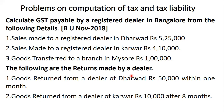Next, the following returns made by the dealer. The goods returned from a dealer of Dharwar amount to 5,25,000 — this is a return against the sale of 5,25,000. Any goods returned by the dealer within six months shall be completely deducted while calculating the taxable value of supply. Therefore it has to be deducted when calculating the taxable value of supply.